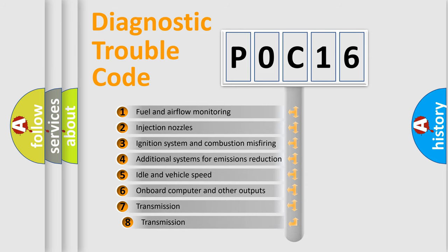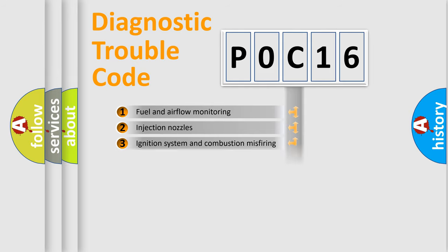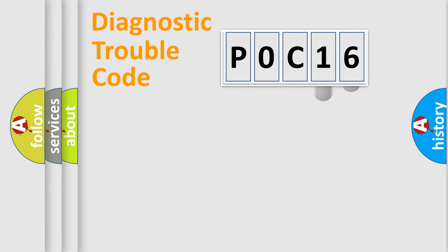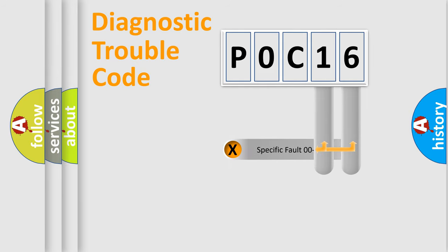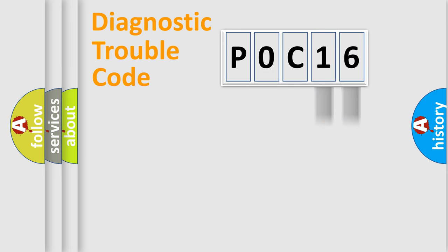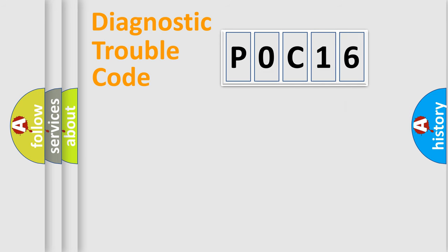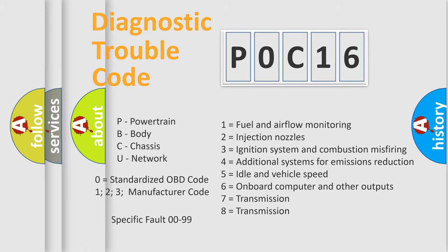The third character specifies a subset of errors. The distribution shown is valid only for the standardized DTC code. Only the last two characters define the specific fault of the group. Let's not forget that such a division is valid only if the second character code is expressed by the number zero.